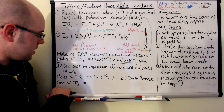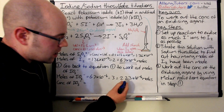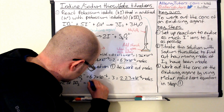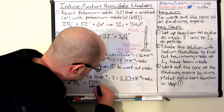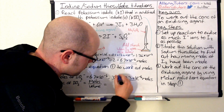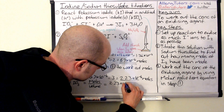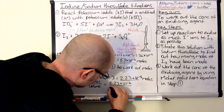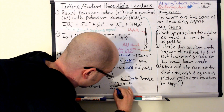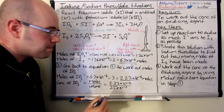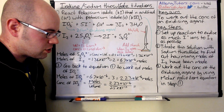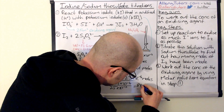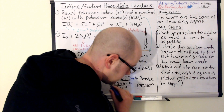The last step is to work out the concentration of iodate ions. Concentration equals moles divided by volume in dm³. Our moles are 2.23 × 10⁻⁴, and our volume is 25 cm³ (the original volume of oxidizing agent), which is 25 × 10⁻³ dm³. Dividing gives a concentration of 8.92 × 10⁻³ mol dm⁻³.